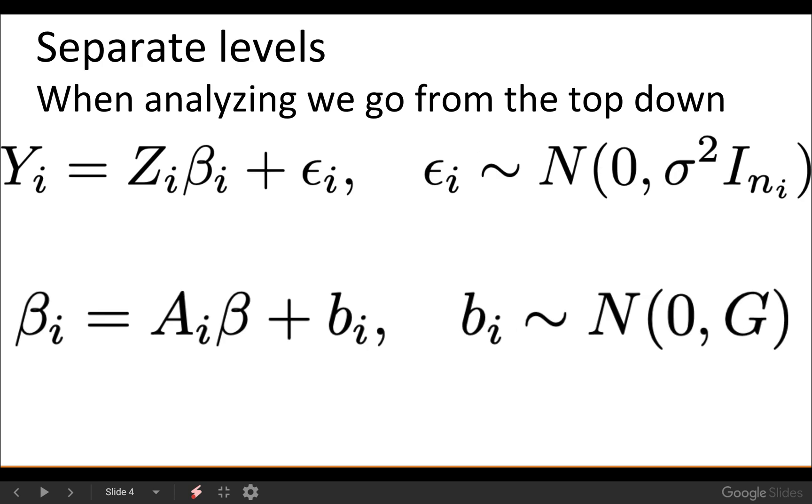So we can separate the levels. This is the two-stage random effects formulation. This is the first level. So this is analogous to looking at the analysis of each subject's reaction time as a function of getting their slope and intercept. Here this is combining each subject's slope and intercept to get group parameters beta. And when analyzing data, we work our way from the top down. So first, we think about it from the top down, we get the subject-specific beta_i's first, and then we combine them to get the betas.